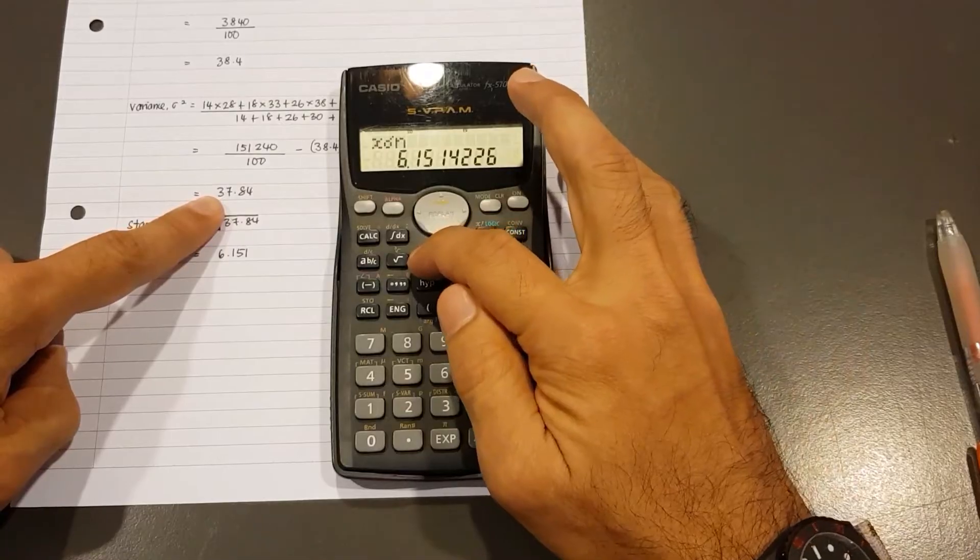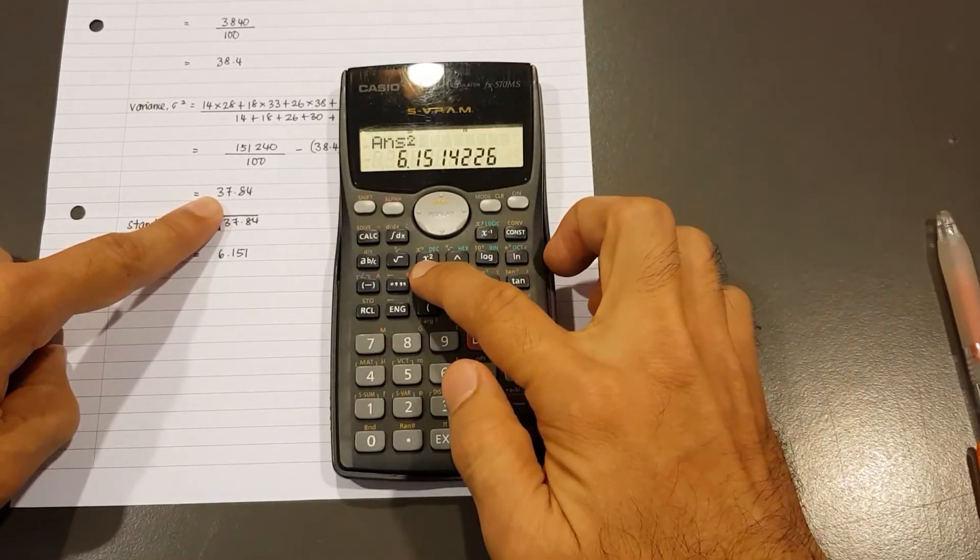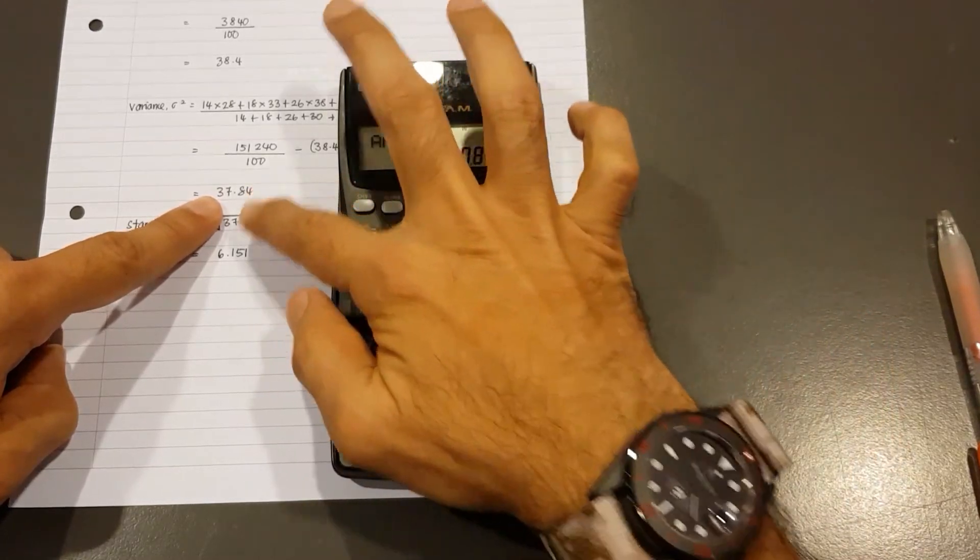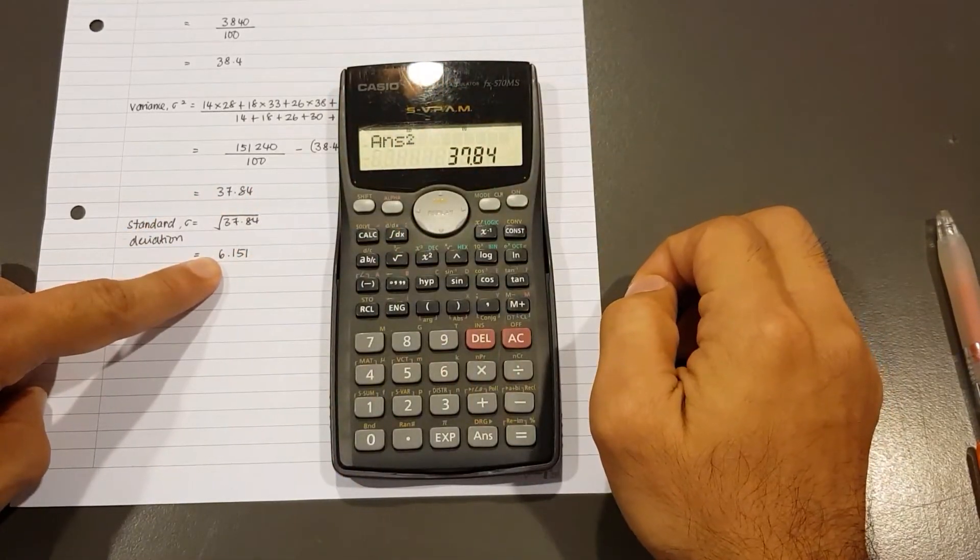Well, all you do is just tap Square. Right there. Square. And then equal. And you get 37.84. So that's the variance. And that is the standard deviation.